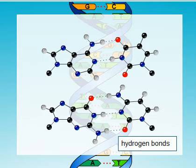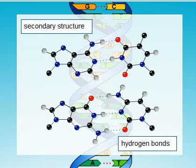Hydrogen bonds between the nitrogenous bases of each strand of a DNA molecule stabilize the secondary structure of the DNA helix.